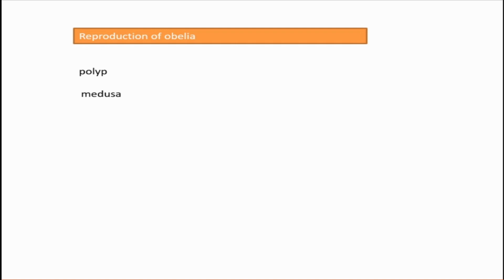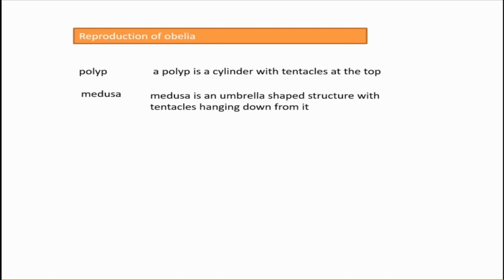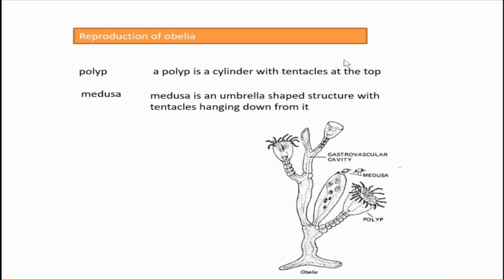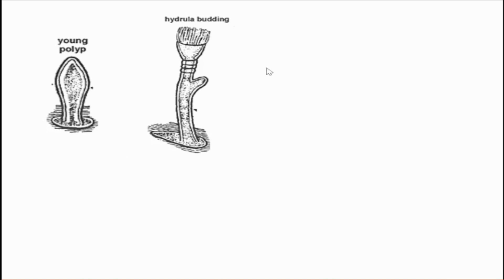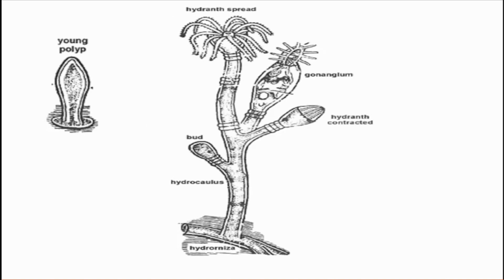Polyp and medusa are the two morphological forms. Polyp is cylindrical with tentacles at the top; medusa is an umbrella-shaped structure with tentacles hanging down. The polyp phase represents the asexual phase. From the polyp form, medusa buds form, and when they mature, they come out. The young polyp grows and first develops gastrozoids, since nourishment is significant for the growth of this colony.